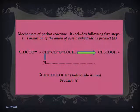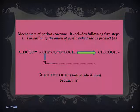Friends, let us start the mechanism of Perkin reaction. It includes the following 5 steps. The first step is formation of the anion of acetic anhydride, that is product A. The reaction is given below.